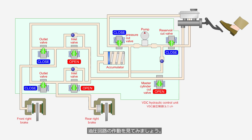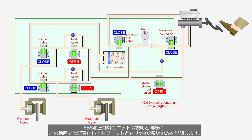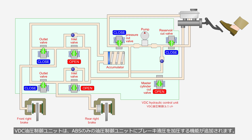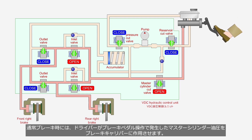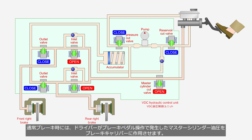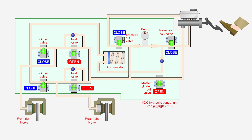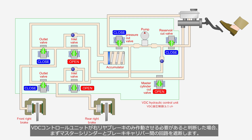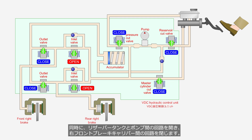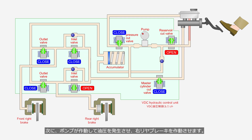Let's take a look at the operation of the VDC hydraulic circuit. Similar to the ABS explanation, this video will simplify to cover only the right front and right rear circuits. The VDC hydraulic control unit adds the function of pressurizing brake fluid to the ABS hydraulic control unit. At normal operation, the hydraulic pressure generated by depressing the brake pedal applies to the brake calipers. When the VDC control unit determines the need to activate only the right rear brake, it first shuts the circuit between the master cylinder and the brake caliper. Simultaneously, it opens the circuit between the reservoir tank, pump, and the right rear brake caliper. The pump then activates to generate hydraulic pressure, enabling the operation of the right rear brake.